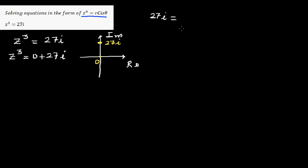To convert to polar form, you ask: how far away is this point from the origin? This distance is 27. And what's the angle that this point makes with the positive arm of the x-axis? Well, this is 90 degrees. So 27i written in polar form is 27 cis 90.